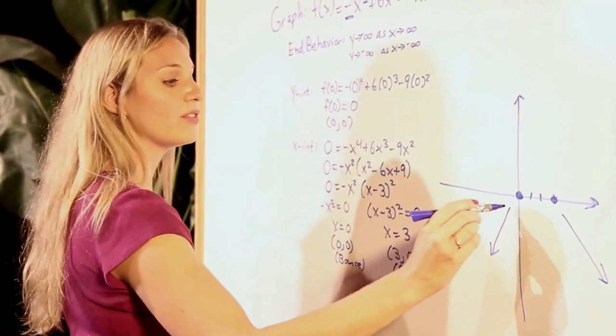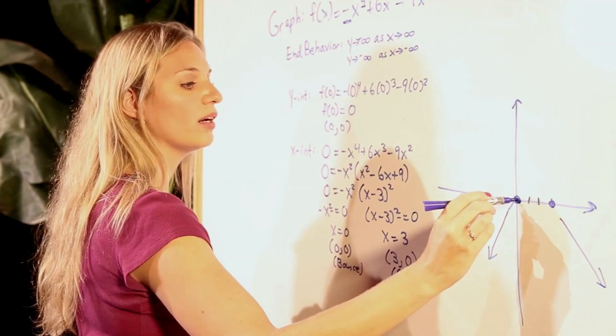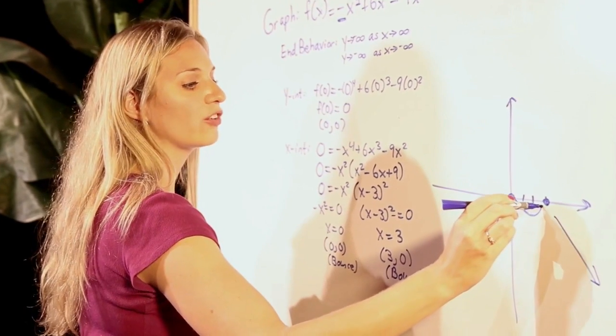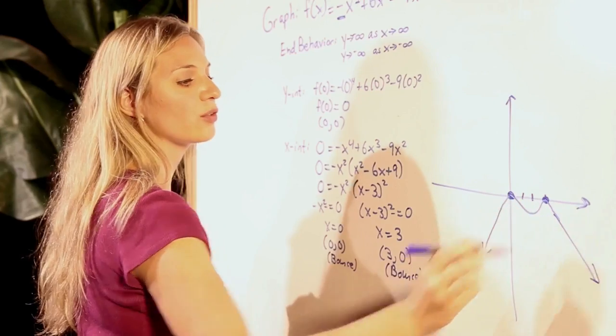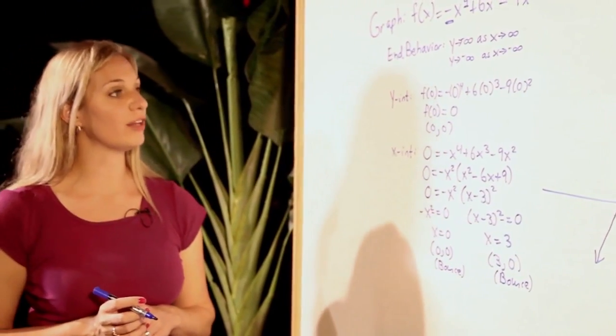Since we have bounces and not crosses, we will go to our intercept, change directions, and repeat. And thus, we have the final graph of our given polynomial.